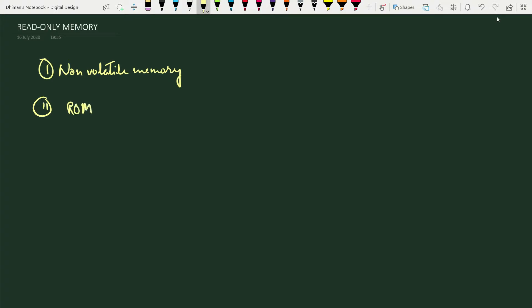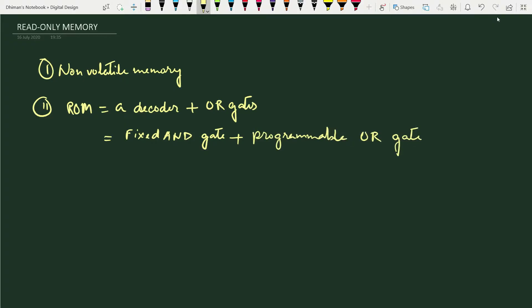A ROM consists of a decoder plus OR gates. The decoder usually consists of fixed AND gates — fixed AND gate here means it has some fixed input AND gates. These OR gates are programmable, meaning the OR gate inputs used for the design of the ROM can be programmed or changed. So a read-only memory essentially consists of a decoder and some programmable OR gates. The number of OR gates depends on the number of bits used per word.